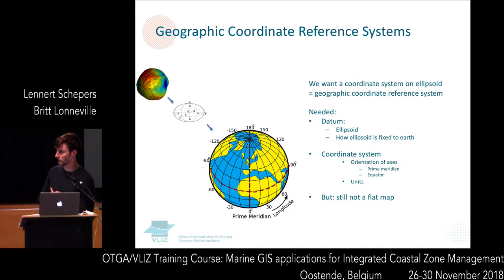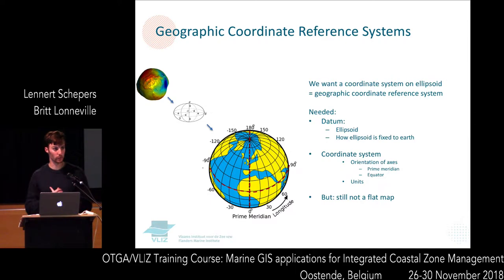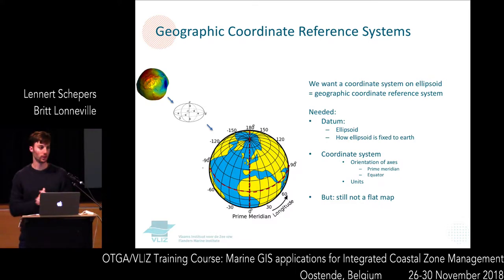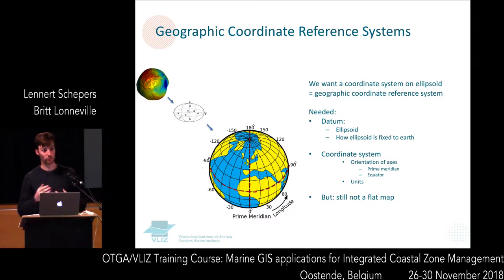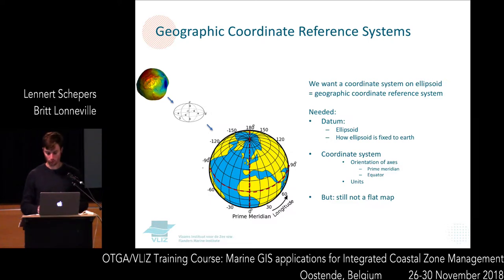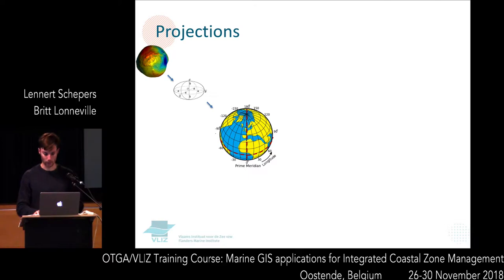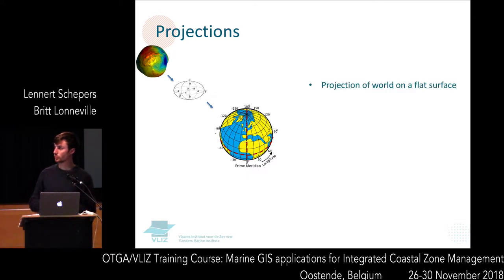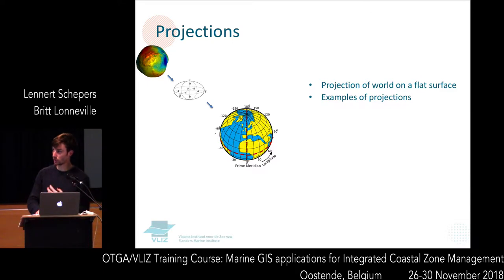That is still not a flat map. So how do you go from this geographic coordinate system — coordinates on the ellipsoid — to a flat map? That is the third step: a projection. We use a projection to project the earth onto a flat surface. You have to think of a projection as a light in the middle of the earth that shines outwards and is projected onto a flat surface.